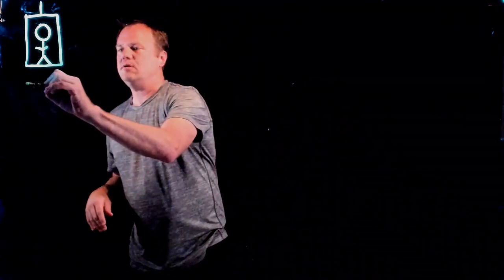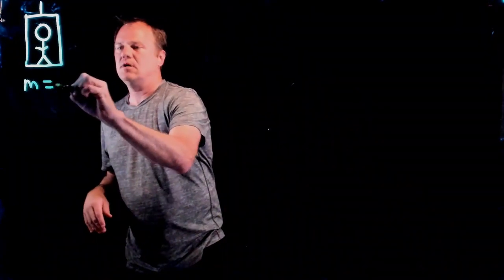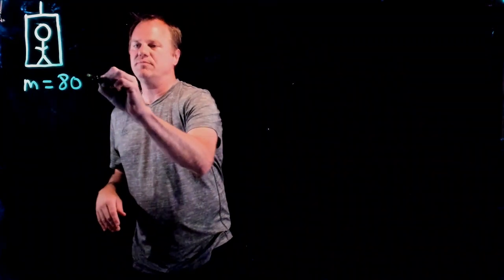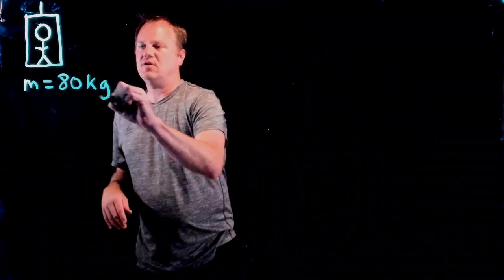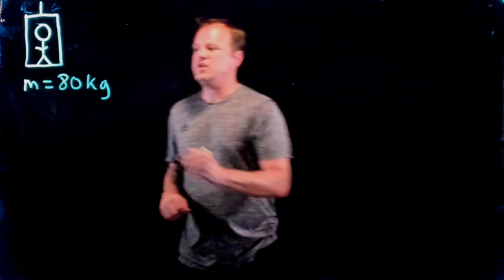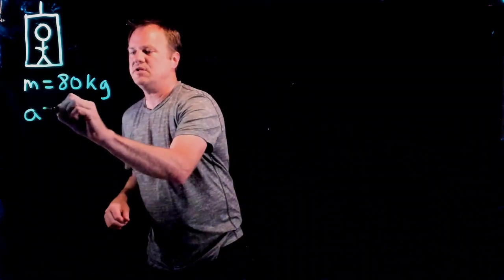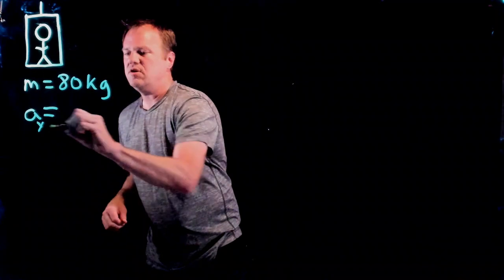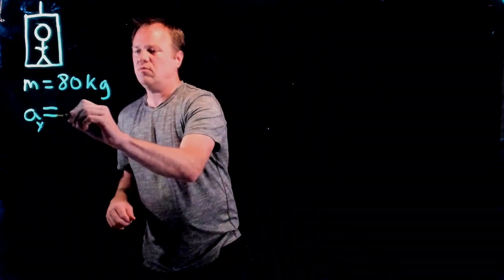Hi, I'm going to show you how to calculate the forces on a person in an elevator that's accelerating downward. We have that the person has a mass of 80 kilograms and they are accelerating downward at 2 meters per second squared. In a conventional coordinate system, the downward acceleration would be negative 2 meters per second squared.